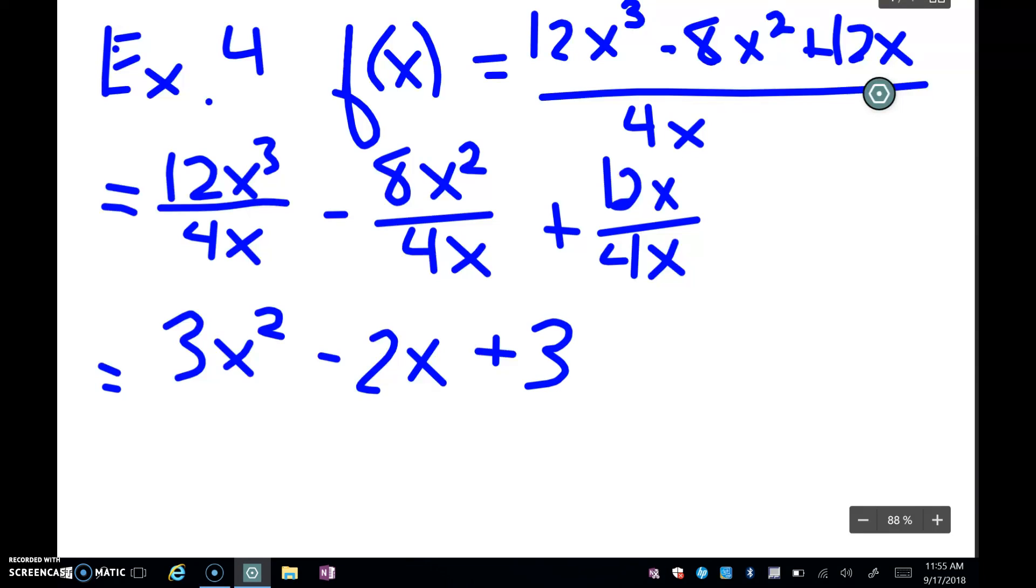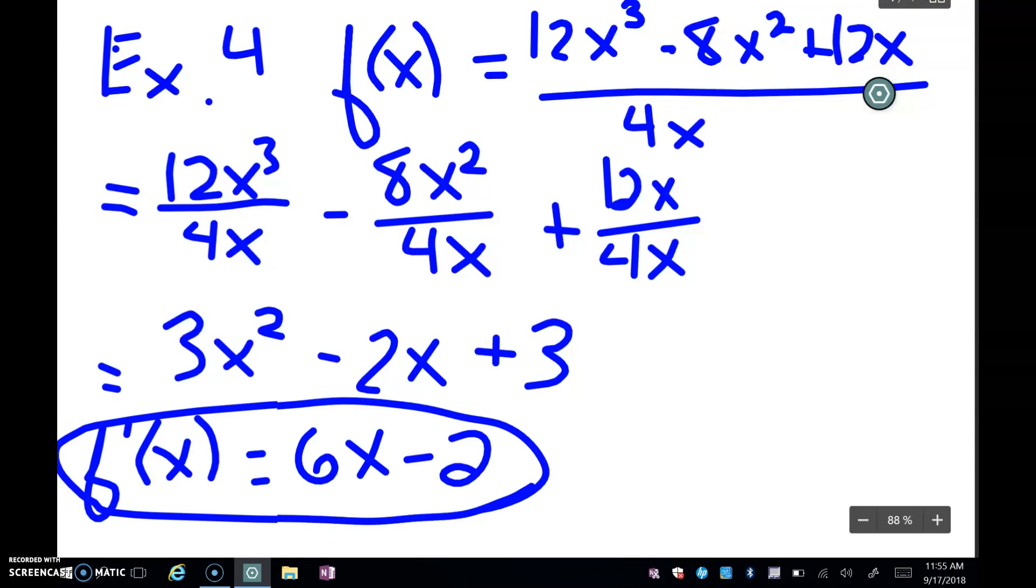And now it's in the form I wanted in, just sums and differences. So my derivative, my f prime going term by term is going to be 6x - 2 plus 0, or just 6x - 2.